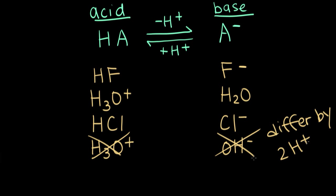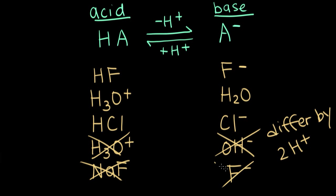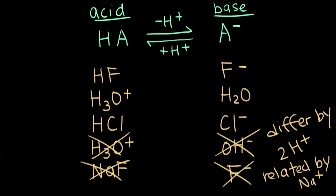The last example is the relationship between sodium fluoride and fluoride. We said fluoride is the conjugate base of HF, but sodium fluoride and fluoride are not a conjugate acid-base pair — because if fluoride accepts a proton, we don't get sodium fluoride; they are related by a sodium ion, not an H⁺. In summary, a conjugate acid-base pair is two species with the same formula except one has an extra proton: the acid has the extra proton, which it can lose to form the base.